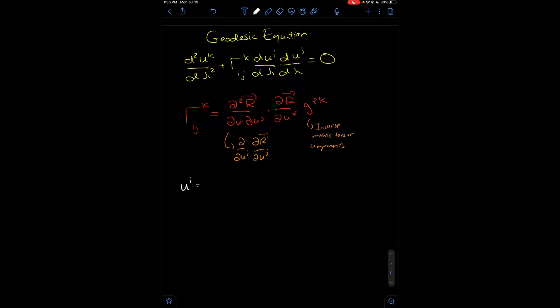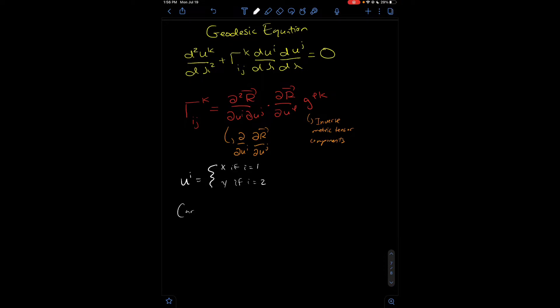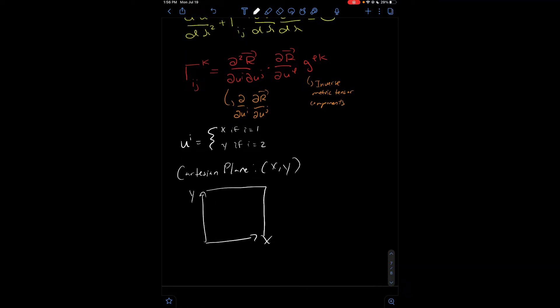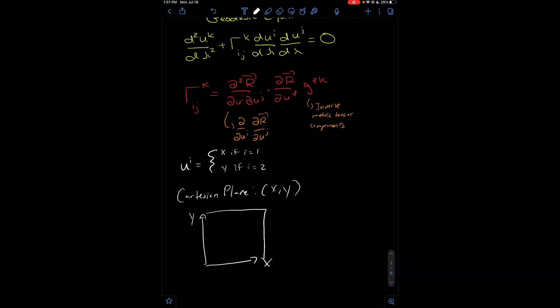So, first of all, notation. I have some variable u^i, or just u raised to any variable. Now, u^i just means x if i equals 1, it means y if i equals 2. And the Cartesian plane is defined... Well, the Cartesian plane is just x, y. Just all the points x, y makes up the plane, right? It's the one that we learned from 5th grade. This one over here.